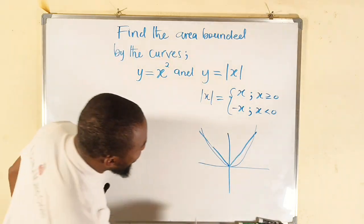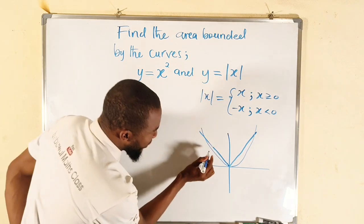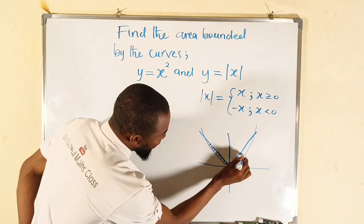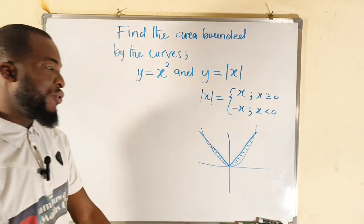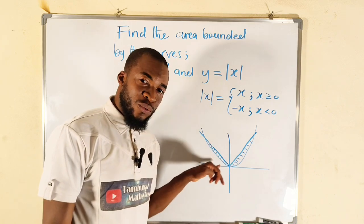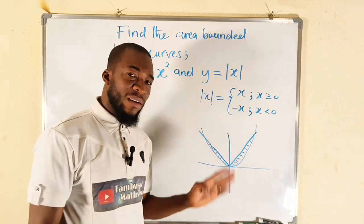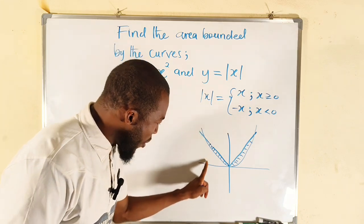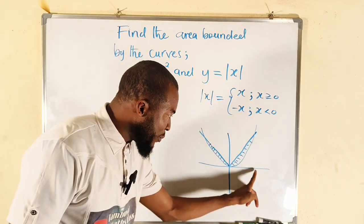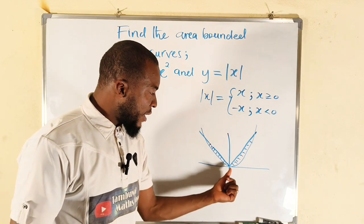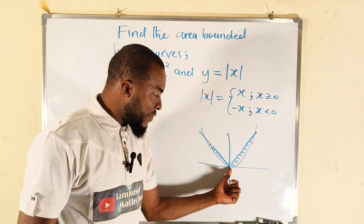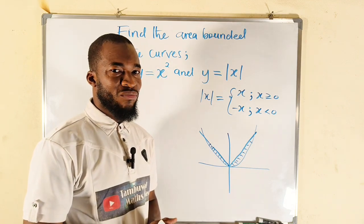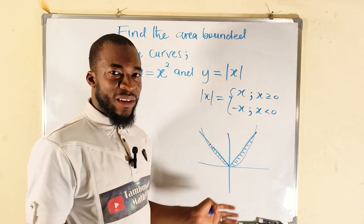So we would like to find the area between the two curves. Do you see this region? We would like to find the area between these two regions. And if you observe, the two regions are symmetrical—they have the same area. So instead of finding the area from this point down to this point, we can simply take the area between zero to this point, then we multiply by two, as simple as that, because we have two identical areas.